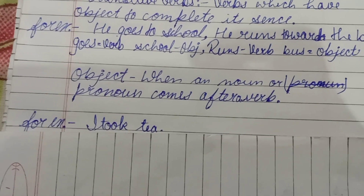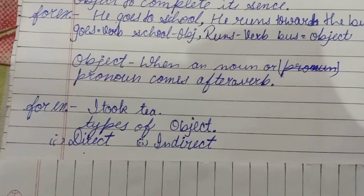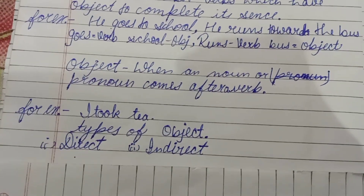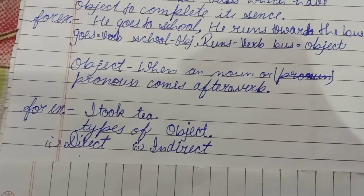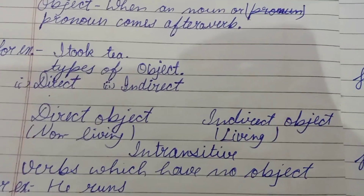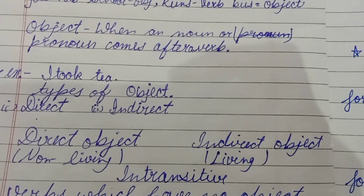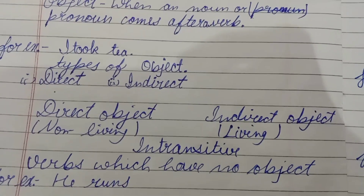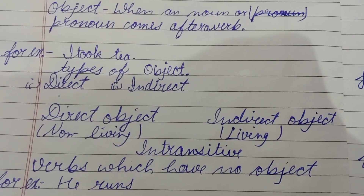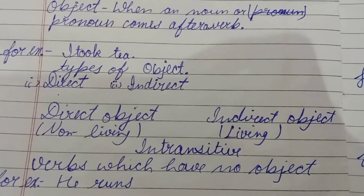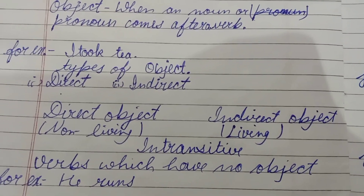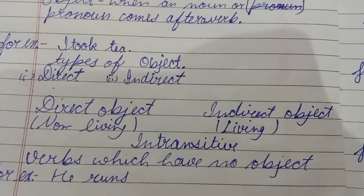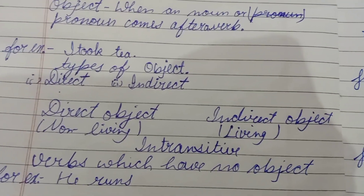Jaise 'maine chai uthai.' Iske bhi do prakar hote hain: ek direct aur second indirect. Direct refers to non-living things, indirect refers to living things. Intransitive verbs are verbs which have no object — for example, 'he runs.'